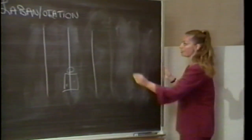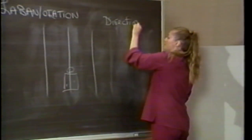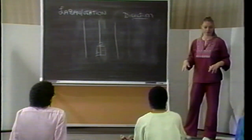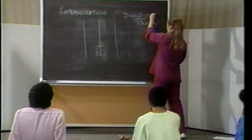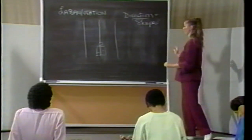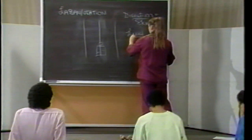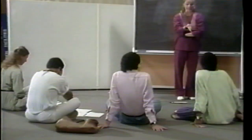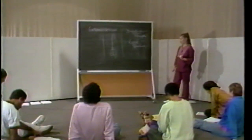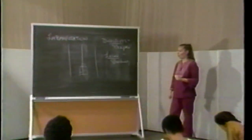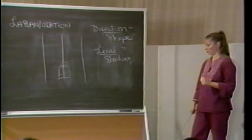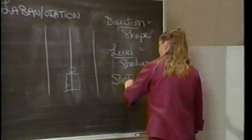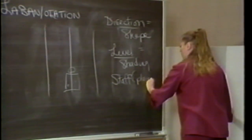Let's see what we've got so far. You can tell which direction you're moving in by the symbol's shape. The shading — whether it's dotted, solidly colored in, or striped — tells you what level you're moving in. And where the symbol is placed on the staff tells you what part of the body is moving, distinguishing right from left.